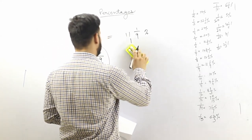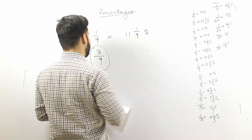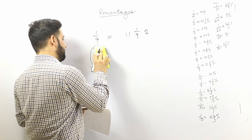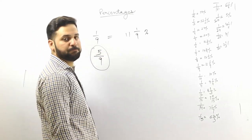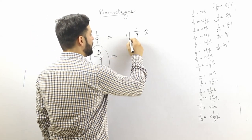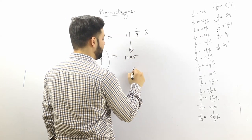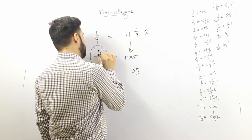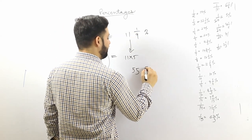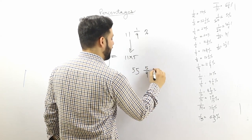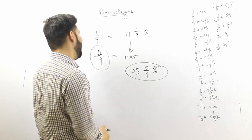That was easy because 3/9 is one third. Let's take another example — what is the value of 5/9? Simply multiply 11 by 5 to get 55, then multiply the numerator by 5 to get 5/9. So the answer is 55 and 5/9 percent.